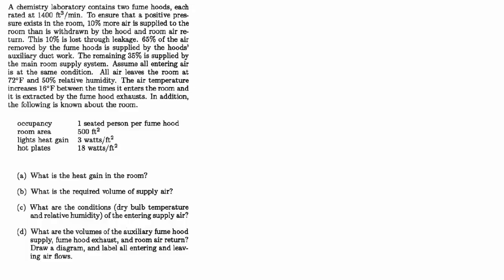101 Solve Mechanical Engineering Problems, HVAC-12. A chemistry laboratory contains two fume hoods, each rated at 1400 CFM. To ensure that a positive pressure exists in the room, 10% more air is supplied to the room than is withdrawn by the hood and room air return. This 10% is lost through leakage. 65% of the air removed by the fume hoods is supplied by the hood's auxiliary ductwork.